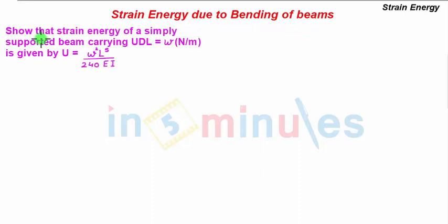The problem statement is: show that strain energy of a simply supported beam carrying UDL equal to W newton per meter is given by U equals W squared times L to the power 5 divided by 240 EI, where L stands for length of the simply supported beam and EI is Young's modulus and moment of inertia of the cross-section of the beam.